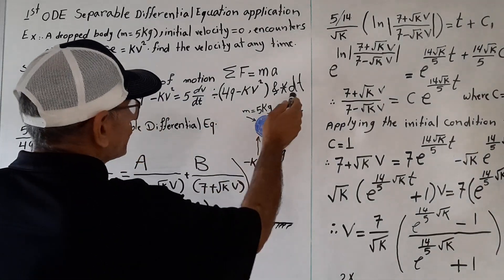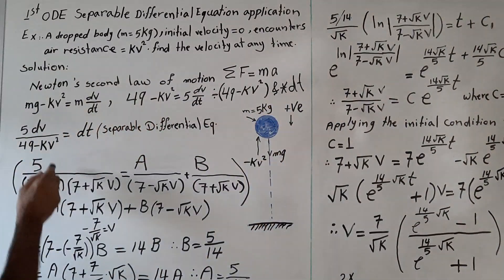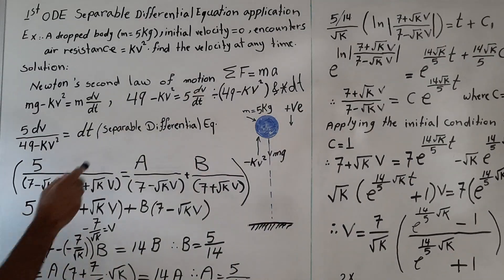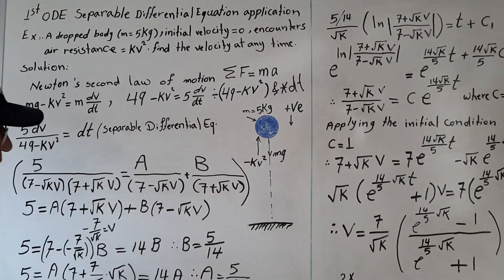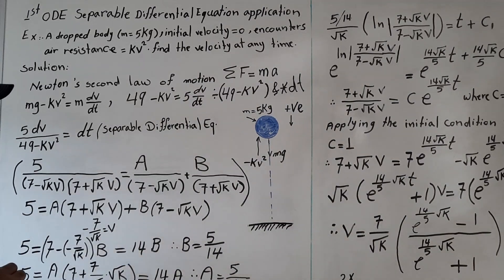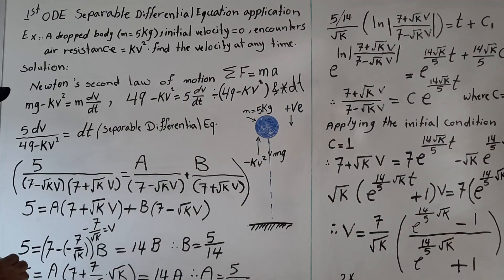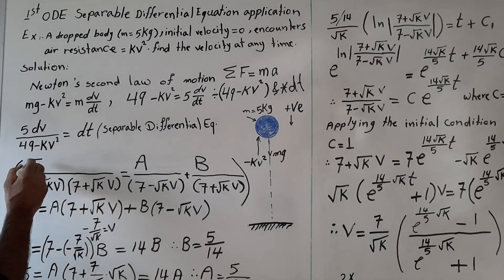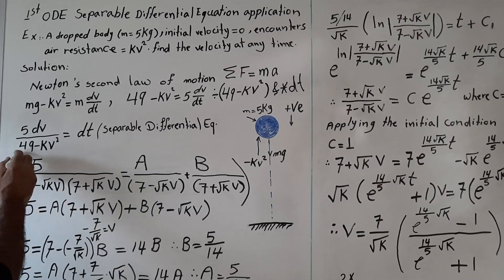We divide over 49 minus kv squared and multiply by dt. We got this separable differential equation. How to solve this equation? We use the partial fraction decomposition technique, the integration technique.